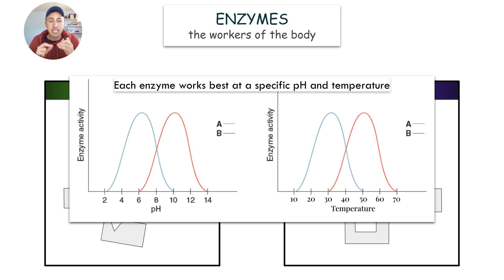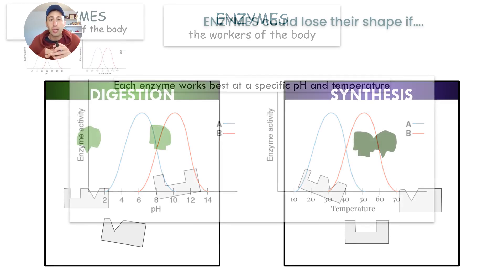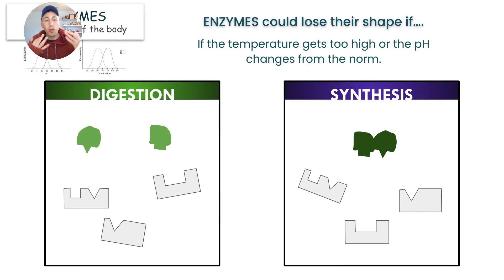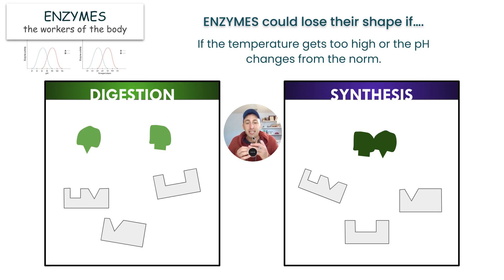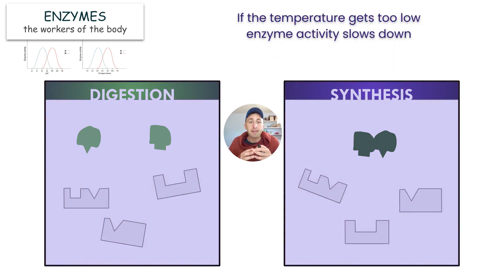Every enzyme works best at a specific pH and temperature level. If the temperature gets too high or the pH changes from the norm, enzymes will start to change their shape and cannot function well. That's what happens when someone has a fever — their body temperature rises too much, enzymes cannot function as well because they start to change shape. If it gets too cold, enzyme activity will slow down — that's why we freeze meats, to slow down enzyme activity.